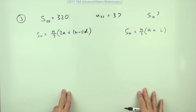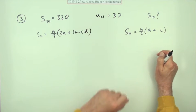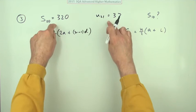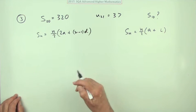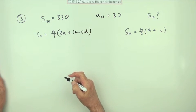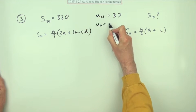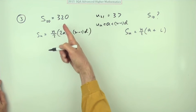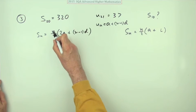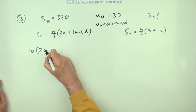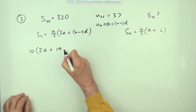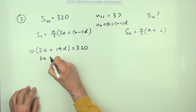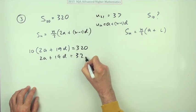So there are actually two routes. You can use the a+l formula since you have a last term here. But you'd probably think of the first formula and set up simultaneous equations since you have two unknowns and two pieces of information. Substituting n=20 and sum=320: 10 × (2a + 19d) = 320, which gives 2a + 19d = 32. That's equation one.